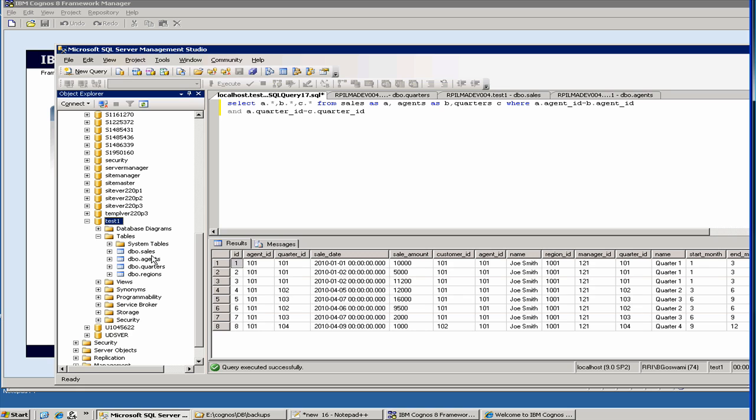Sales, which has the data for the sales volumes. And then there is agents, which has basically sales agent information. And then there are two tables, quarters and regions,